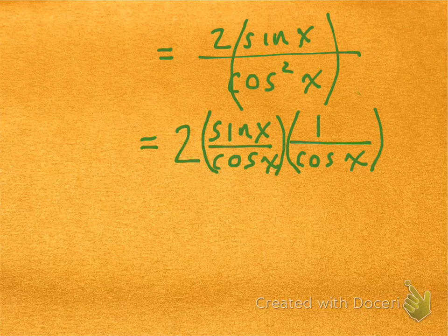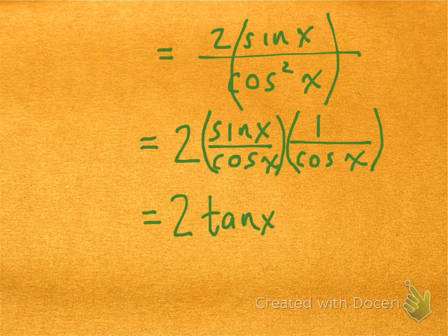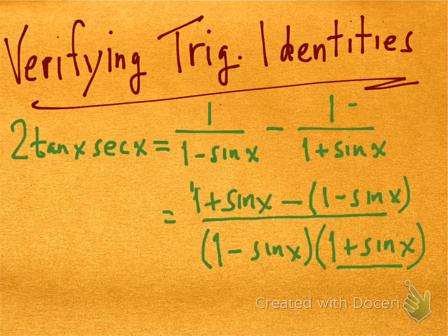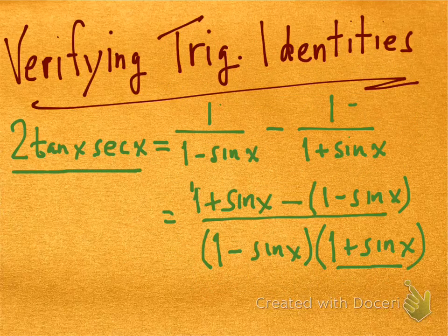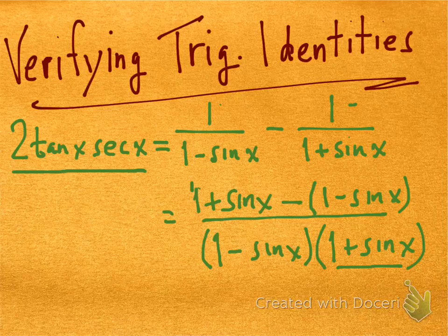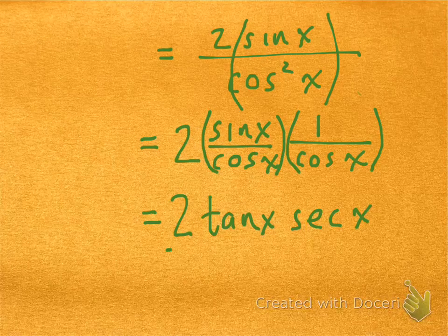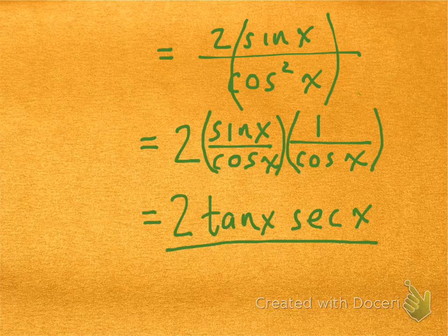And now what we have is the original identity, 2tan(x)sec(x). If we go back to our very first slide here, where we started off, you can see there's the left side of the equation, 2tan(x)sec(x). And we can see that finally, after doing all of that stuff, we end up with 2tan(x)sec(x). So here we go. We're done. Q.E.D.